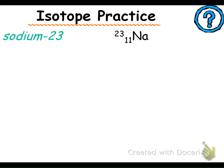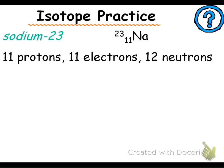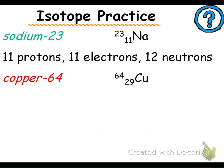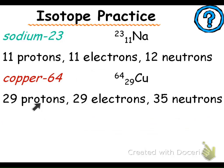Looking at isotope practice: for sodium-23, that's not telling me I have a negative-23 charge — that's the mass number. My mass number is 23 and my atomic number is 11, so I have 11 protons. Because this is not a charged atom, I have 11 electrons. And I have 12 neutrons. For copper-64, my mass number is 64. There's no charge, so you can figure out protons, electrons, and neutrons. For example, you have 29 protons, 29 electrons because it's a neutral atom, and 35 neutrons.